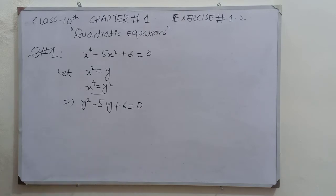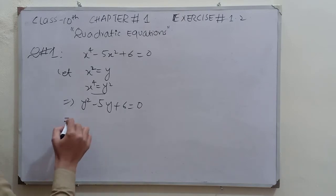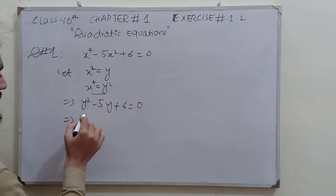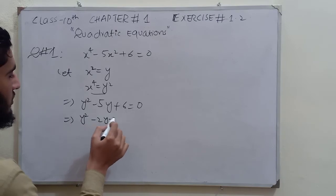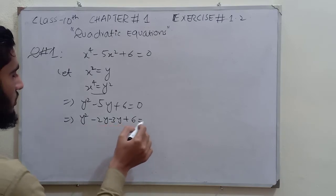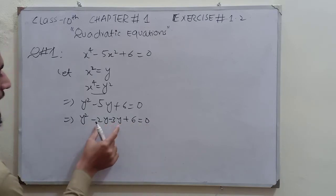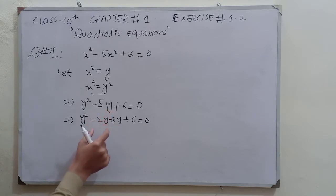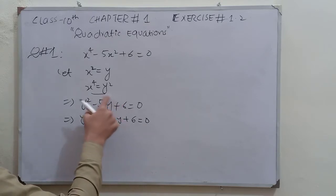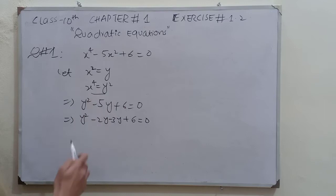Now this equation is reduced to a quadratic equation. We solve it by the factorization method: y² minus 2y minus 3y plus 6 equals 0. If we add minus 3y and minus 2y we get minus 5y, and if we multiply minus 3 by minus 2 we get 6.